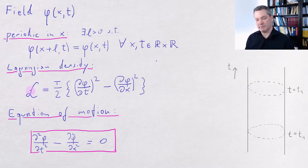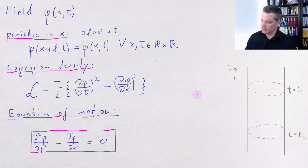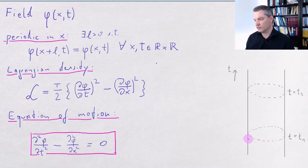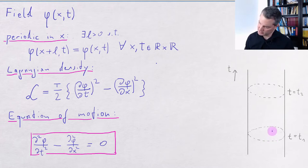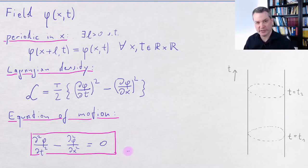We gave the field some dynamics by postulating its Lagrangian density. This Lagrangian density fixes the dynamics of the field — at least the classical dynamics — by the principle of stationary action. Whenever we specify the field values at two points in time, t1 and t2, for all points in space, the principle of stationary action completely defines the evolution of the field values between these two times. From the Lagrangian density we were also able to derive an equation of motion for the field that holds at all points in space and time.